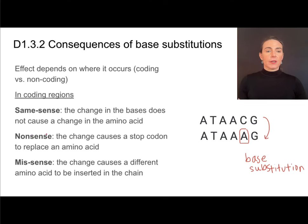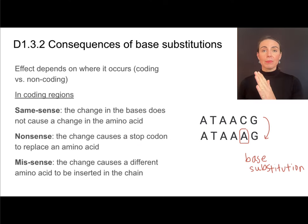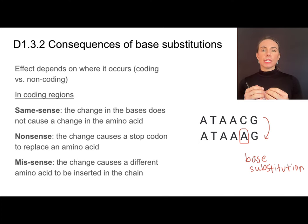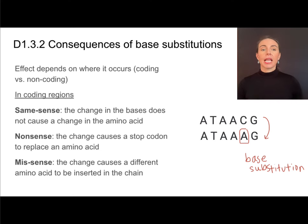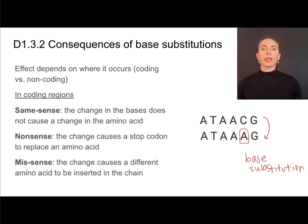These mutations can also cause a non-sense mutation. This means that instead of a normal amino acid, we're going to have a stop codon instead. And when a stop codon is read by that ribosome, it literally stops the translation process. So this will result in a polypeptide that is shorter than what it should be. Finally, we can have a miss-sense mutation. This causes a different amino acid to be inserted into the chain — like with sickle cell anemia, where glutamic acid is substituted for valine.